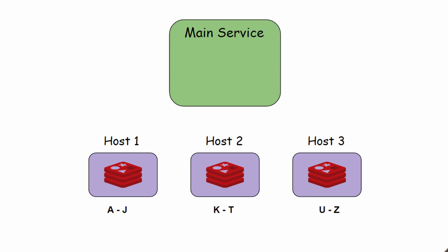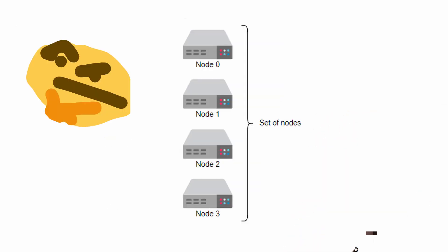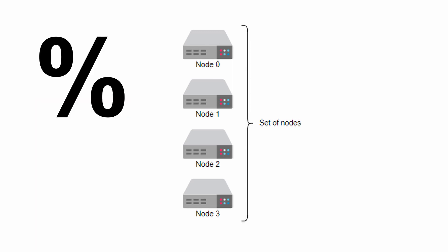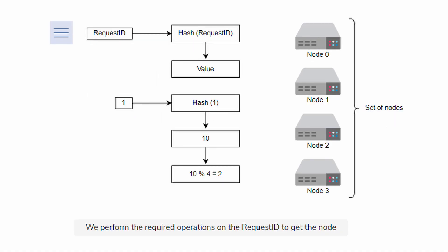Now that we have multiple cache hosts, how do you know which server to send a user's request to? Let's say we have four cache hosts, and we want 25% of requests to go to each host to balance the load equally. The first thing that may come to mind is to solve this with the modulus operator. When a request comes in, we calculate the hash of the input key and find the remainder by taking the modulus with the number of available hosts. The remainder value is the host number, and we send the request to that host.